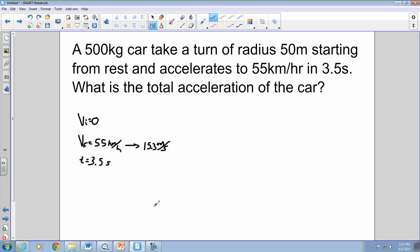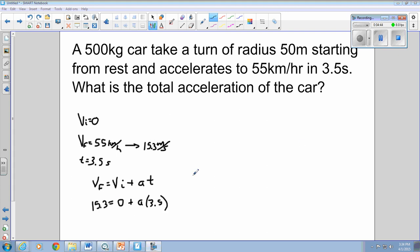And we know that this takes 3.5 seconds. And what we can find from here is the translational or tangential acceleration by using our first kinematic equation, VF equals VI plus AT. Plug in your numbers and solve for tangential acceleration. Tangential acceleration is going to be 4.37 meters per second squared.